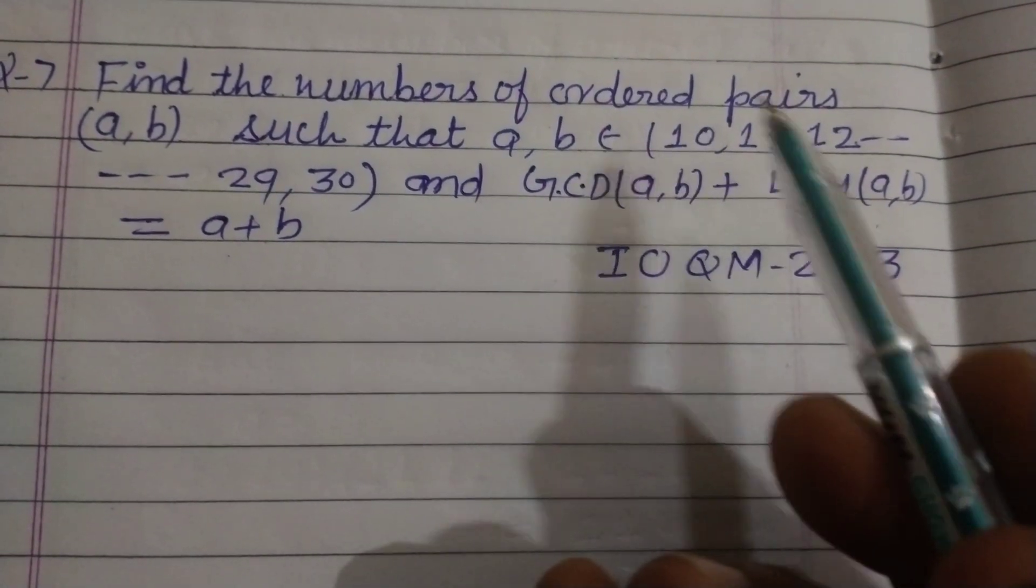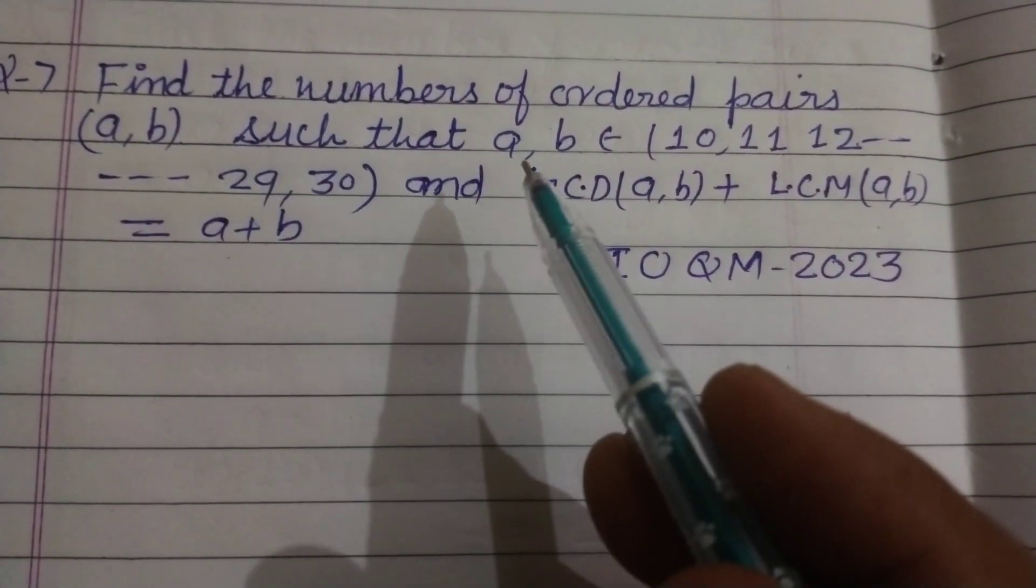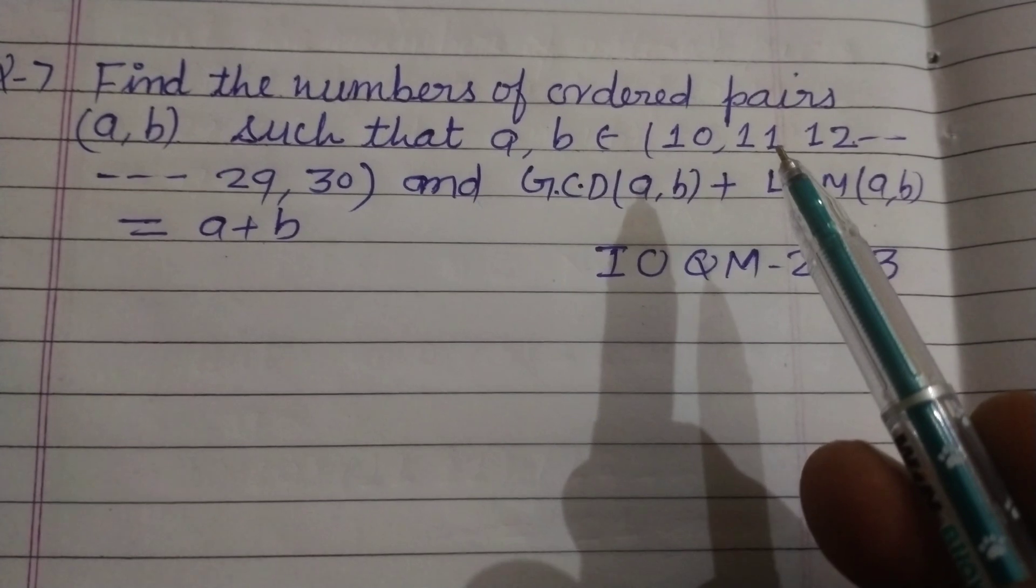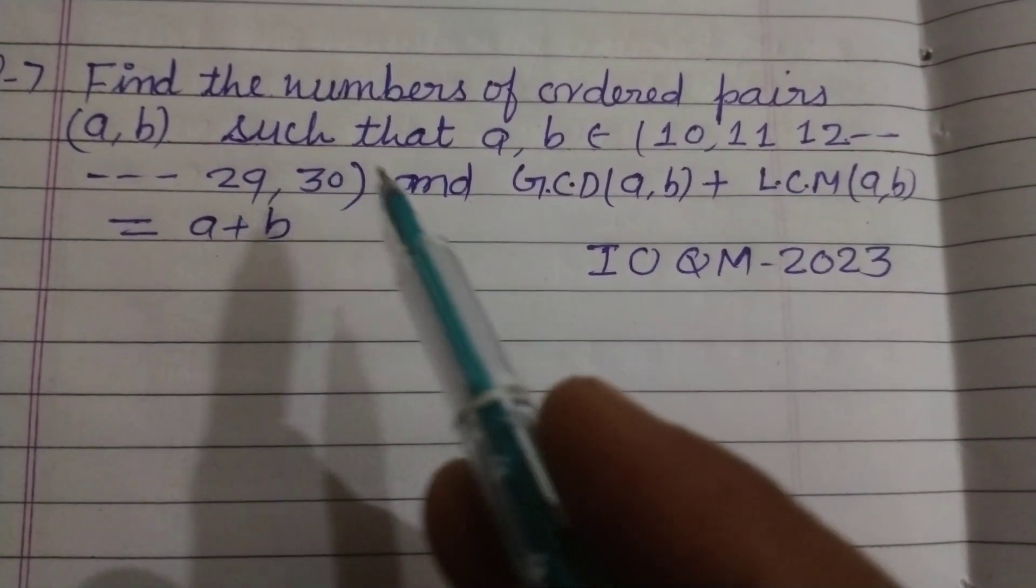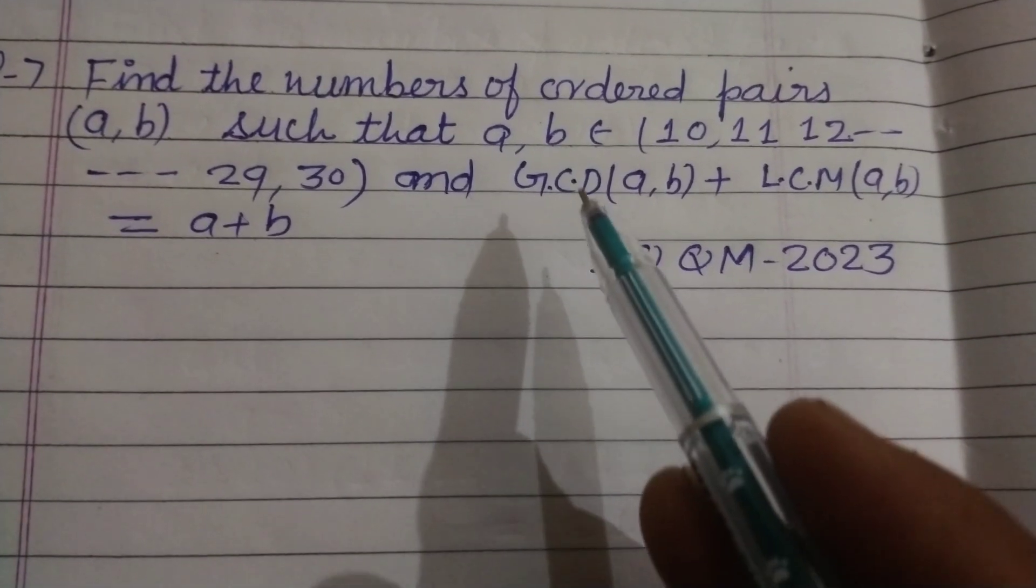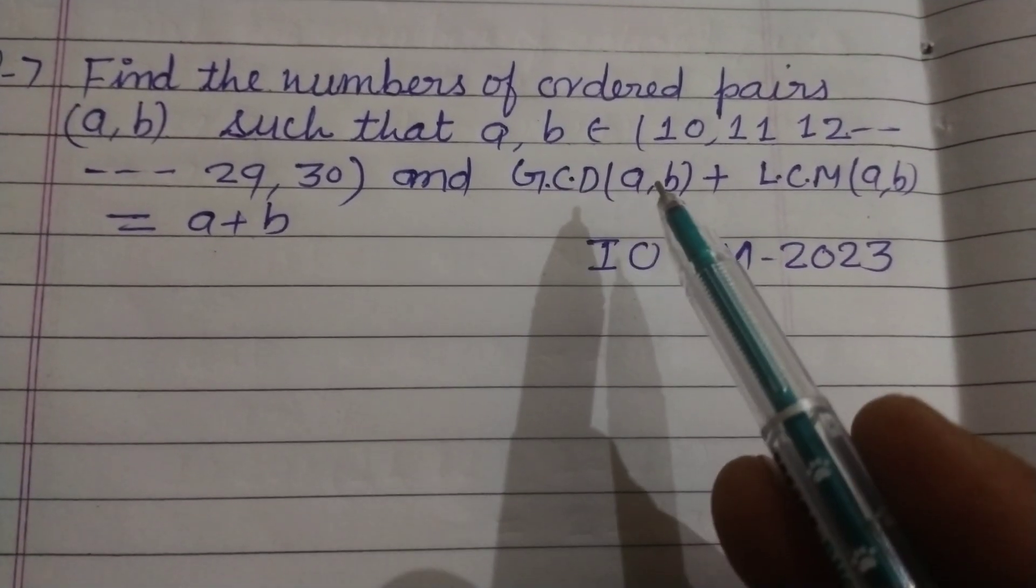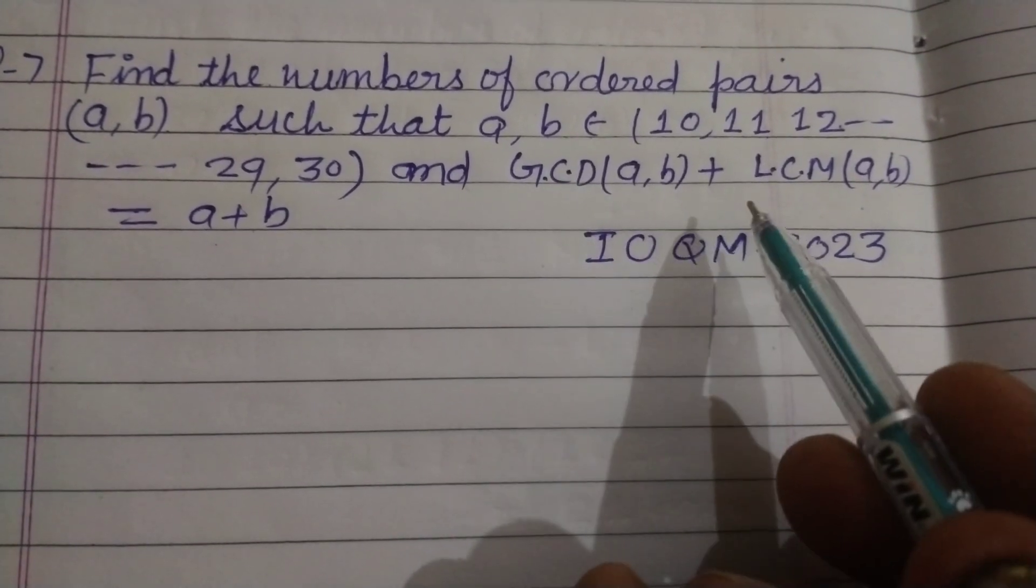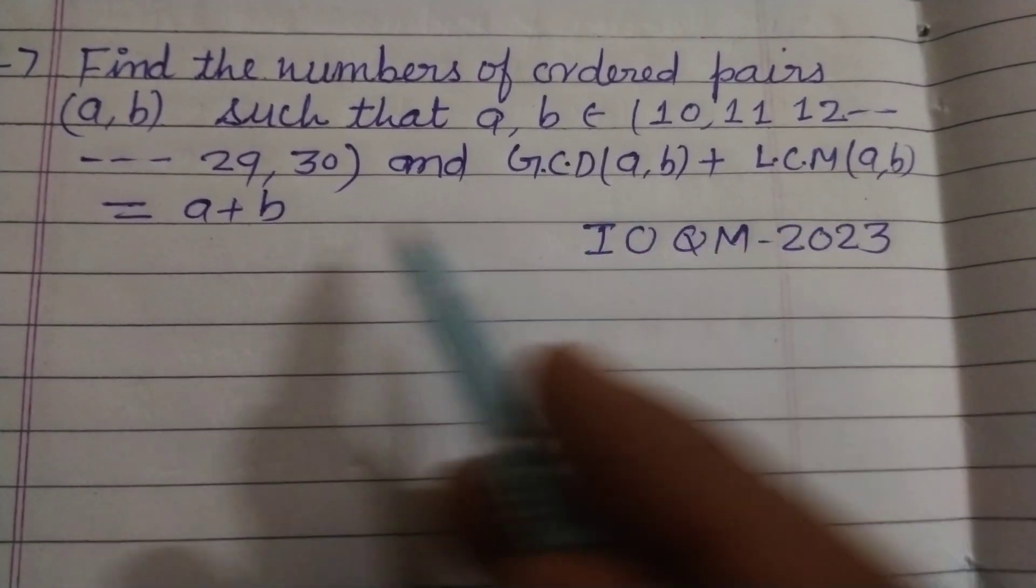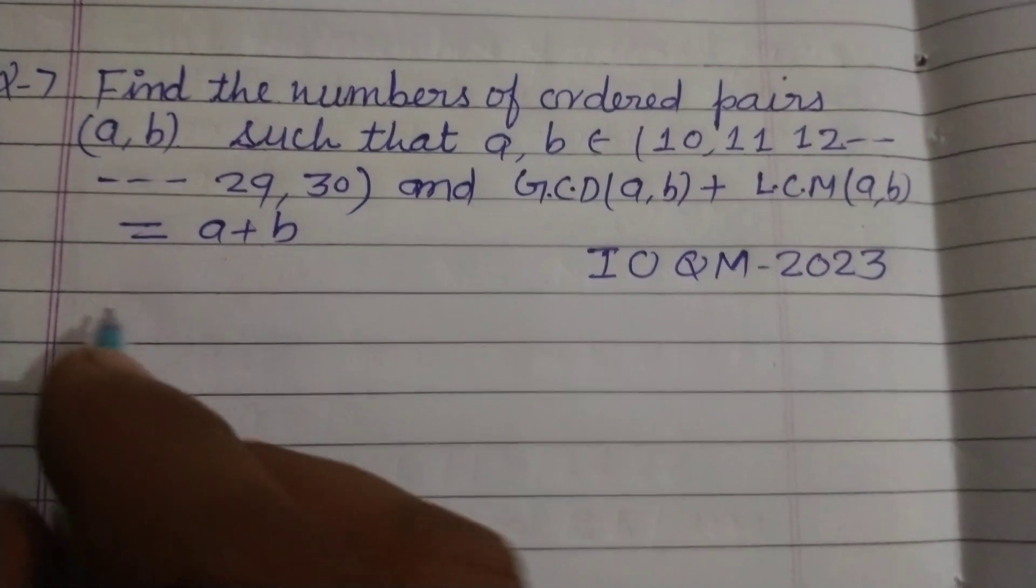Find the number of ordered pairs (a,b) such that a, b belong to the set {10, 11, 12, ..., 29, 30} and GCD(a,b) + LCM(a,b) equals a + b.